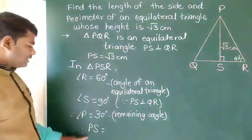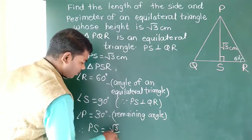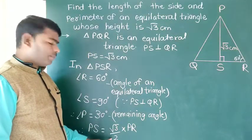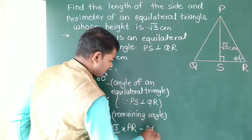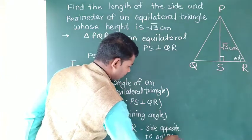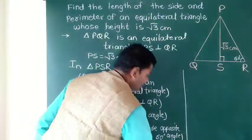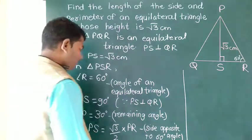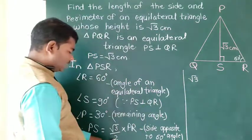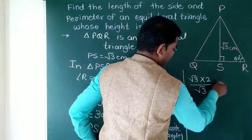The length PS is opposite to the 60 degree angle. So the length PS is equal to root 3 upon 2 times the hypotenuse PR. The height PS is root 3 upon 2 times PR. Since PS equals root 3, we get: root 3 = (root 3 / 2) × PR, so PR = 2.